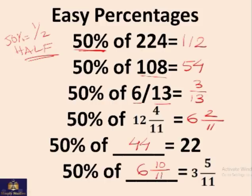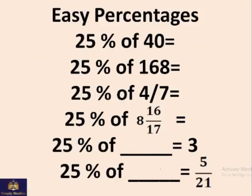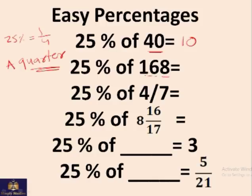Now 25%. 25% means a quarter, it means one fourth. So what's a quarter of 40? 10. So what we're doing, we're just dividing whatever number is there by 4. So 25% of 168 should be 42. 25% of 4 by 7 is 1 by 7.